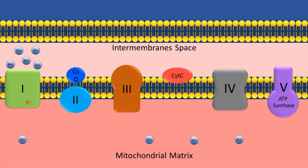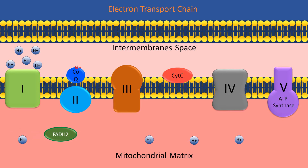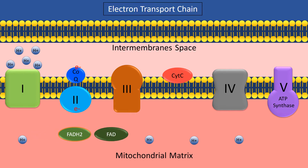Subsequently, complex 1 will pass its electrons to CoQ. At this point, FADH2 — which was produced in the TCA cycle — approaches complex 2 and donates its electrons, turning into FAD. However, complex 2 cannot become supercharged and cannot pump protons from the mitochondrial matrix into the intermembrane space. The electrons from complex 2 then get passed to CoQ. It is important to note that NADH only works at complex 1, while FADH2 only works at complex 2, and that CoQ accepts electrons from both complex 1 and complex 2.